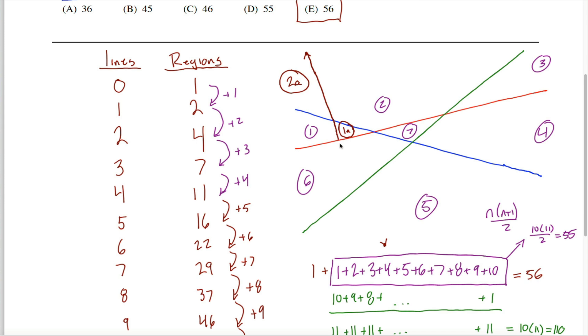Same thing happens when I continue drawing this line to my next point of intersection. Region formerly called 6 is now 6 and 6a. I've created another region. Finally, from my last point of intersection to the end of the line that I'm drawing, I traverse what used to be called region 5 and split it into 5 and 5a.